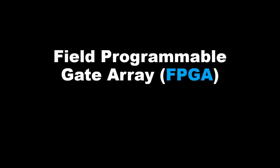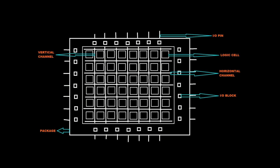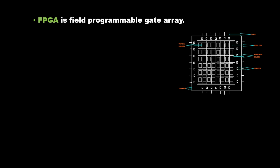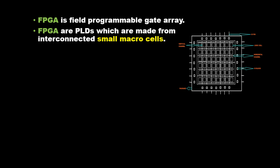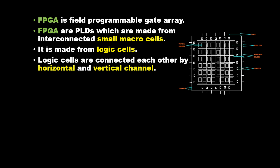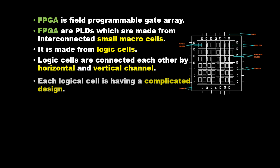Field Programmable Gate Array, FPGA. It consists of IO pins, logic cells, horizontal and vertical channels, IO blocks, and package. FPGA are PLDs which are made from interconnected small macro cells. It is made from logic cells, which are connected to each other by horizontal and vertical channels.